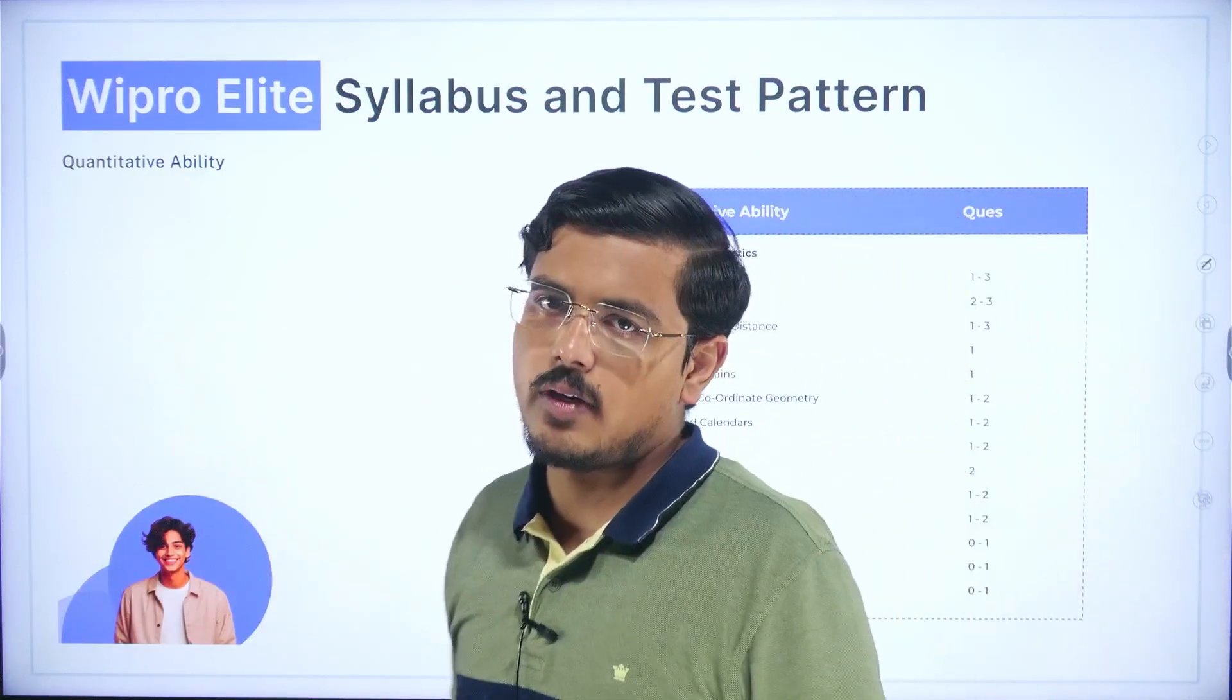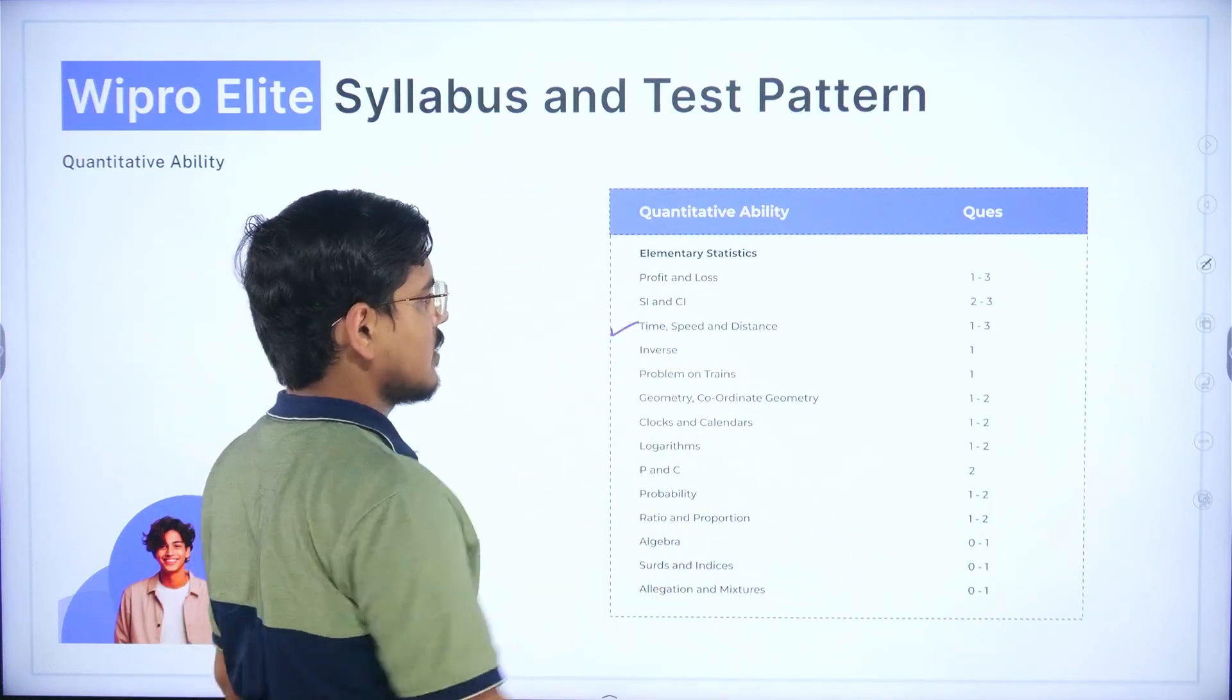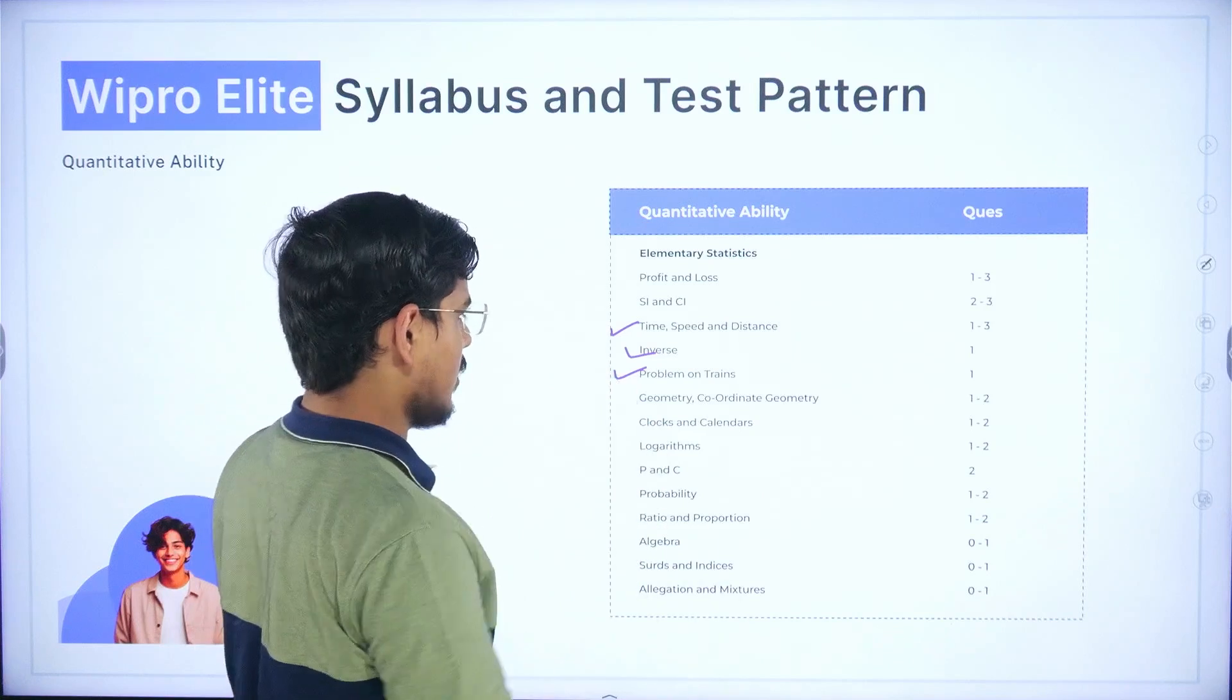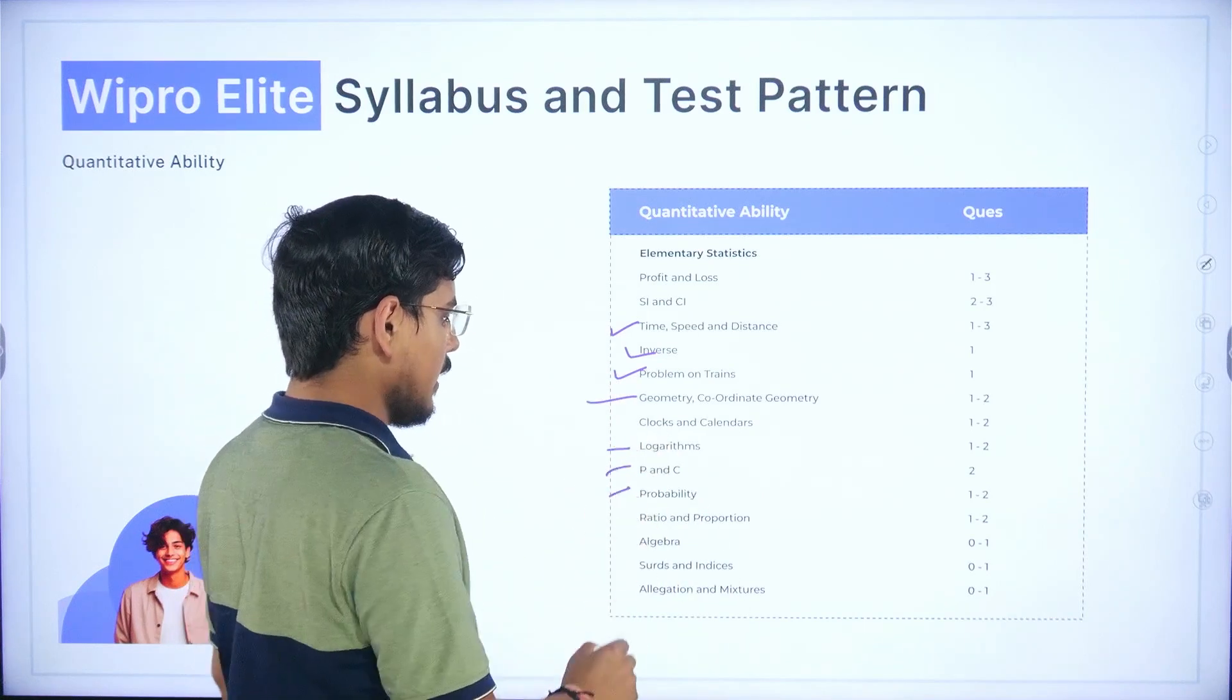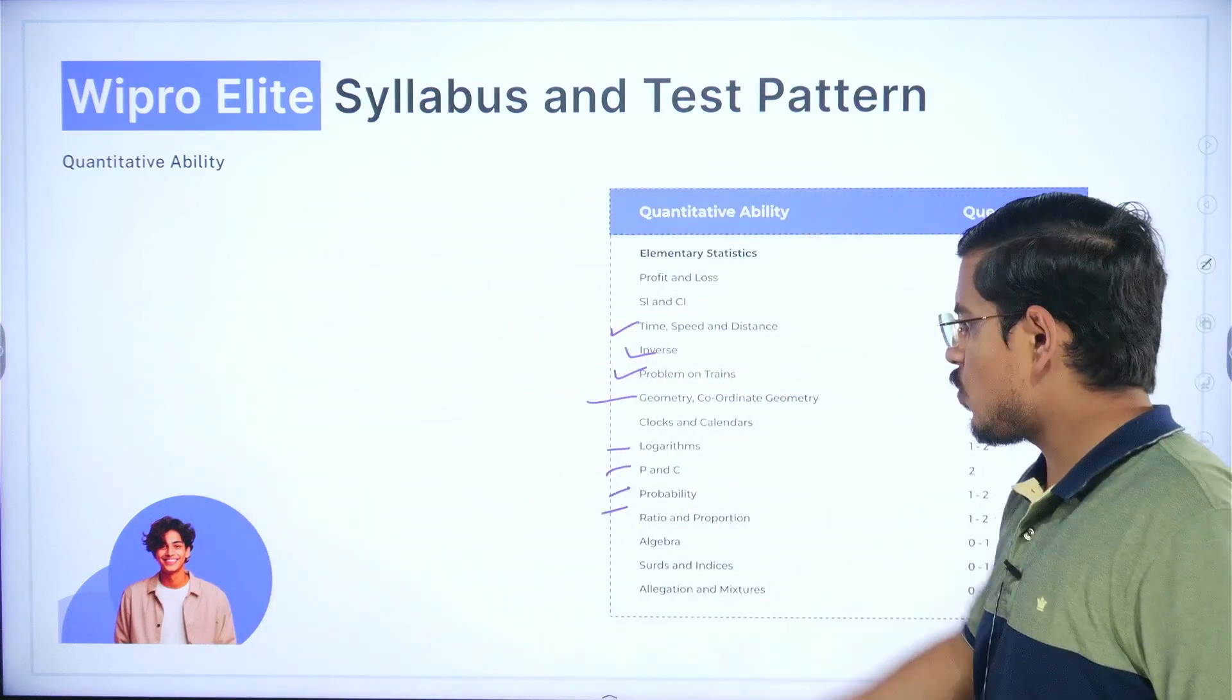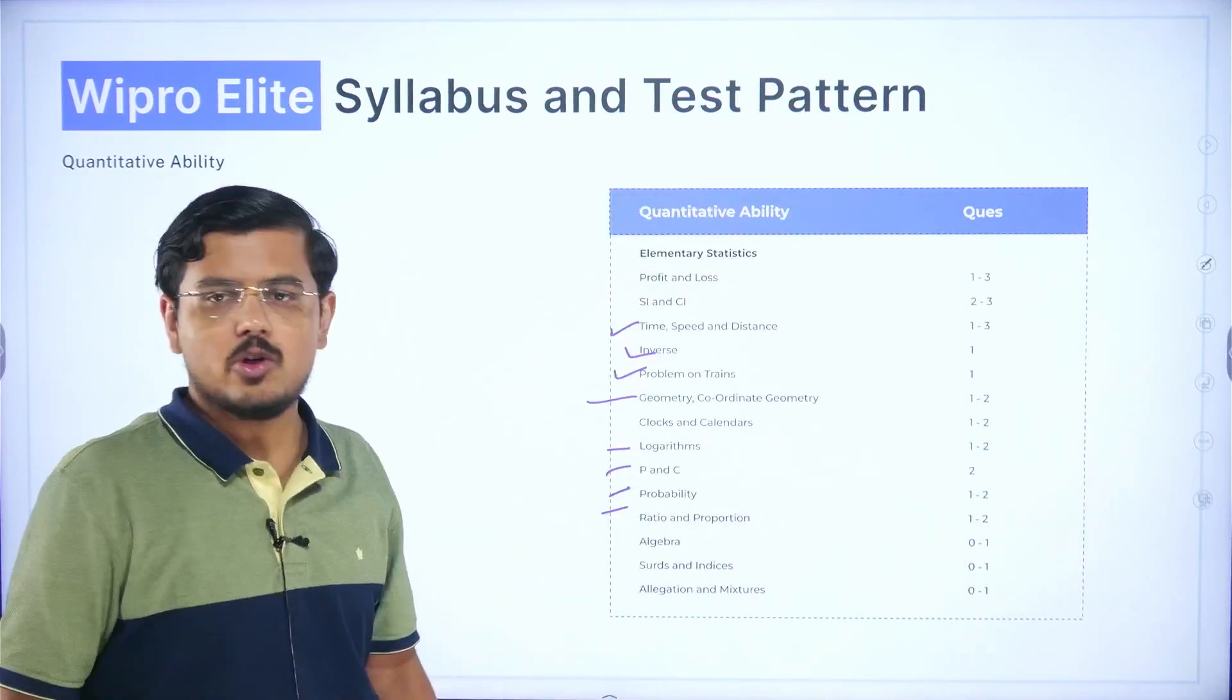Now the quantitative ability syllabus: you have profit and loss, simple interest and compound interest, time speed and distance, inverse, problem on trains, geometry, logarithms, P and C, probability, ratio and proportion, algebra, surds and indices, and allegation and mixtures.